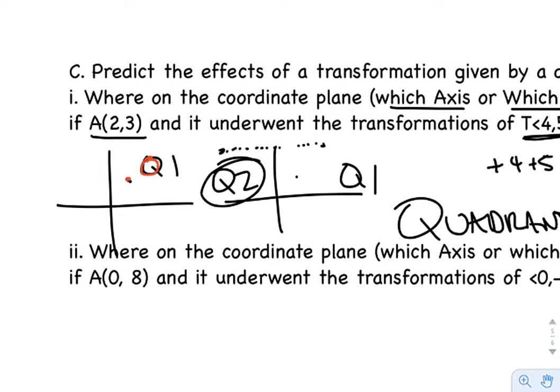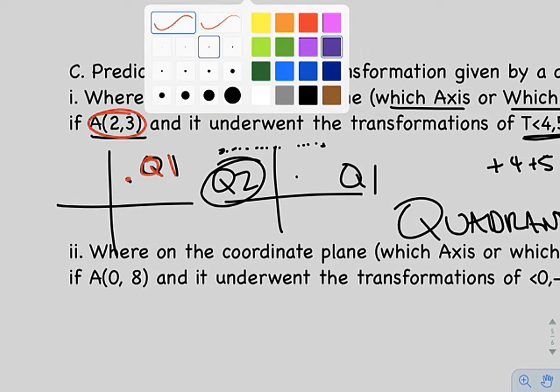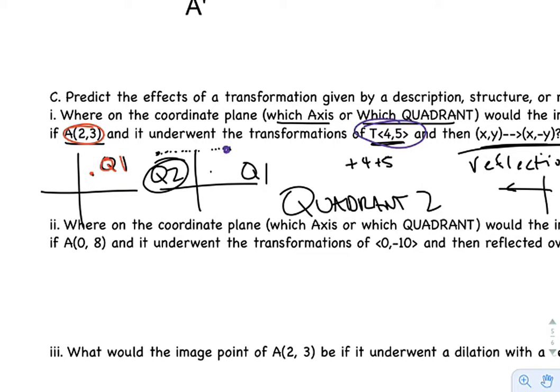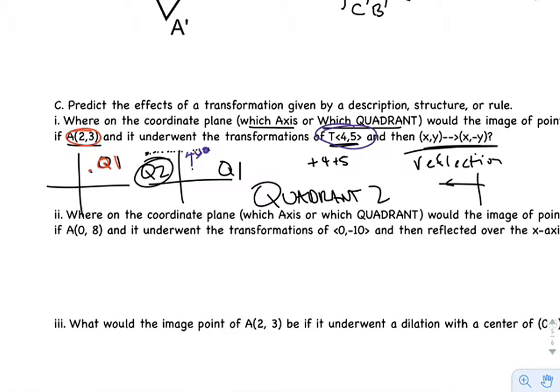So that's (2,3). Once we do this first transformation, the T<4,5>, it's going to end up right here. So it's going to move up 4 and then over 5.